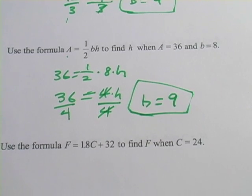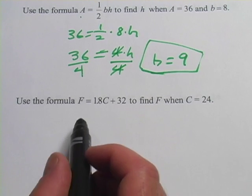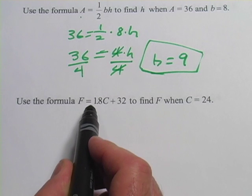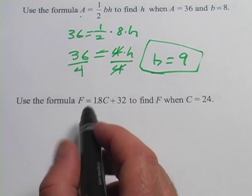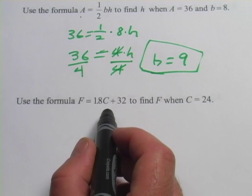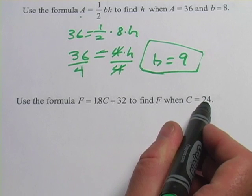Alright, one more. And this is a formula, if you haven't seen it before, I'm sure you will in the future. The formula says F equals 1.8C plus 32. This is actually the formula to convert between Fahrenheit temperature and Celsius temperature. And we're going to find F when C equals 24.